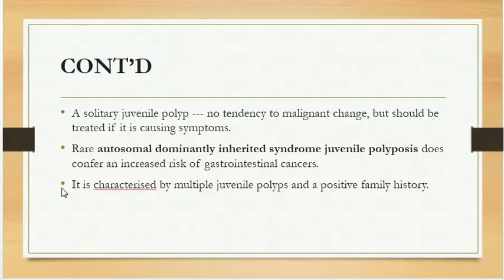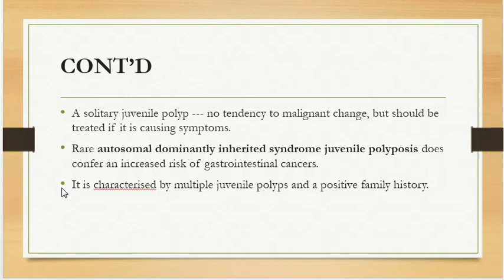Rarely, juvenile polyposis is an autosomal dominantly inherited syndrome characterized by multiple juvenile polyps and a positive family history. Juvenile polyposis does confer an increased risk of gastrointestinal cancer.